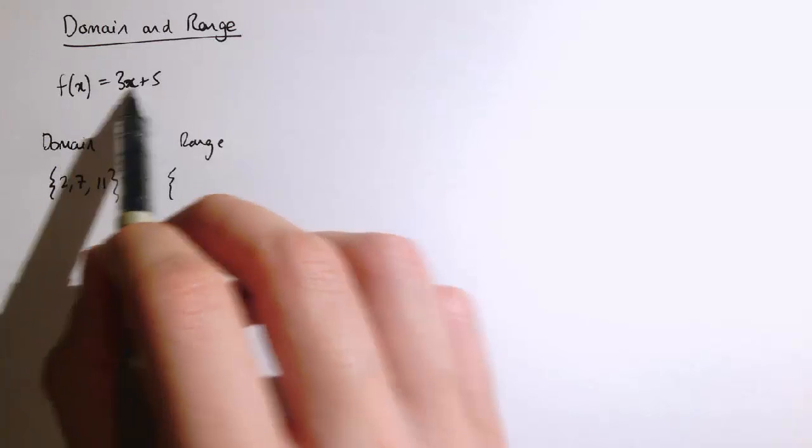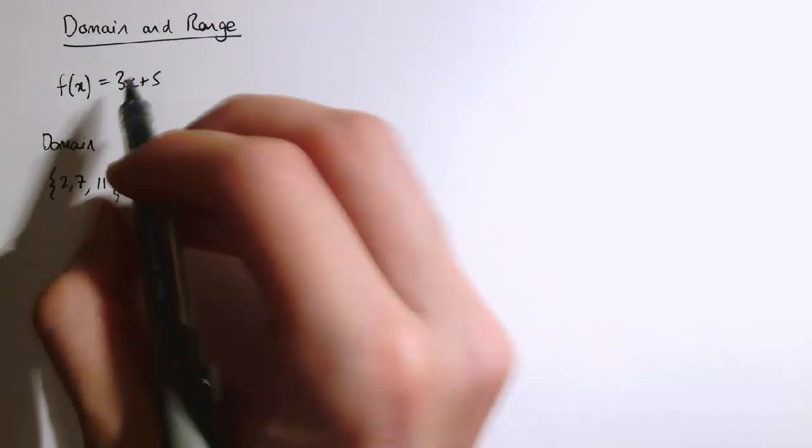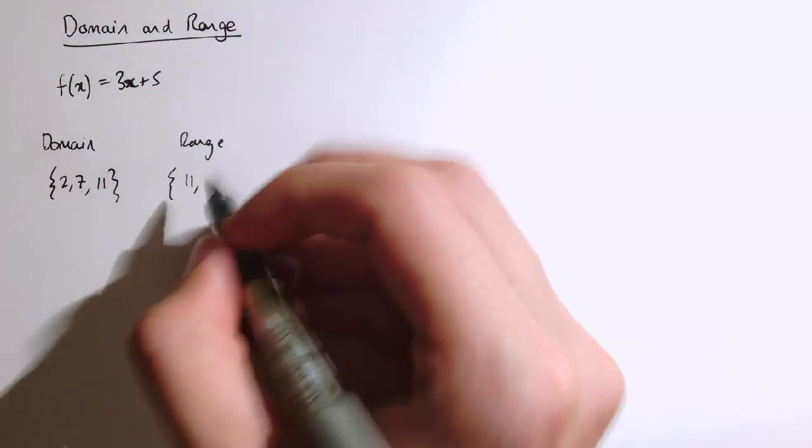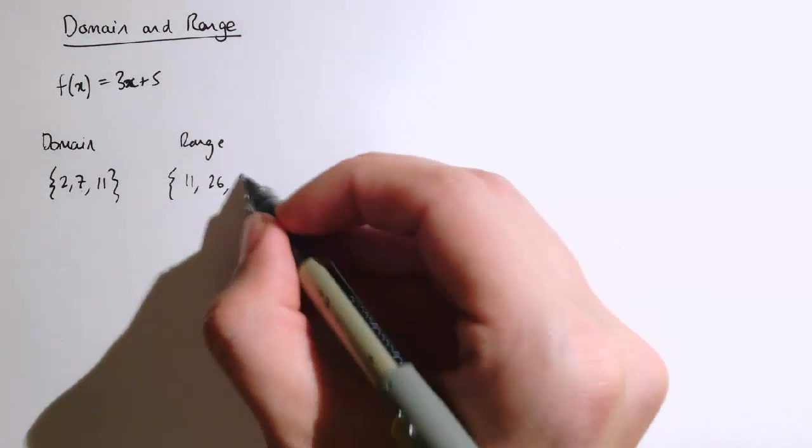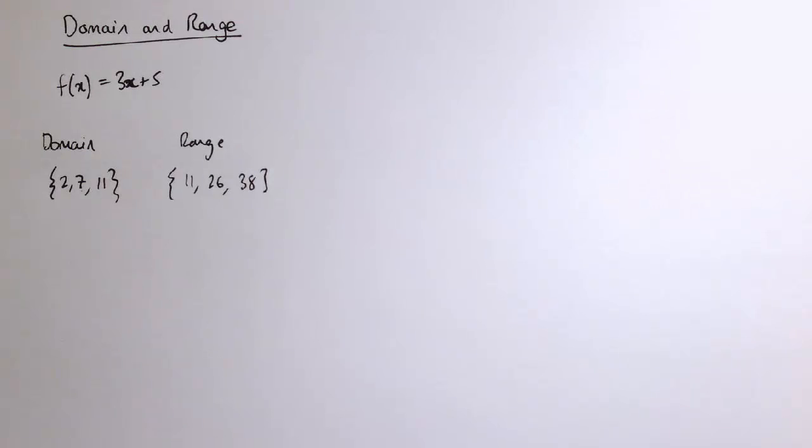f(2) is 11, f(7) is 3 times 7 which is 21 plus 5, which is 26, and f(11) is 33 plus 5 which is 38. So that would be the range.